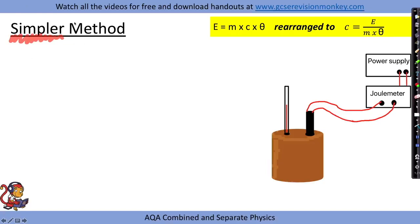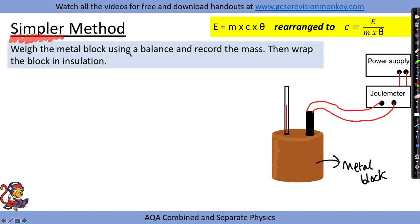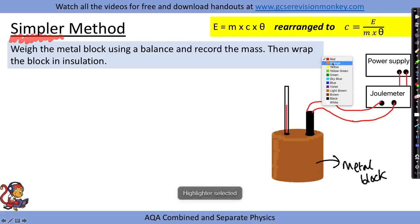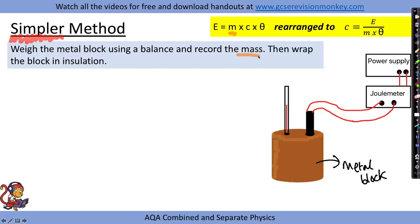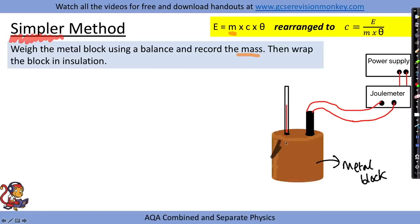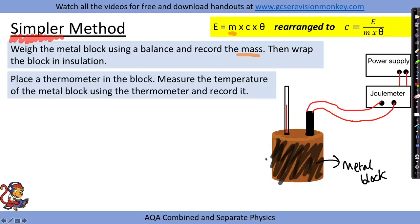Let's say we have this metal block — that's the material we want to measure the specific heat capacity of. In the exam it could be anything like aluminium or copper, or a random substance altogether. The first thing we do is weigh the metal block using a balance and record the mass, giving us the m in our equation. We then wrap the block in insulation to reduce energy transfer to the surroundings — you might use bubble wrap or something similar. Next, we place a thermometer in the block.